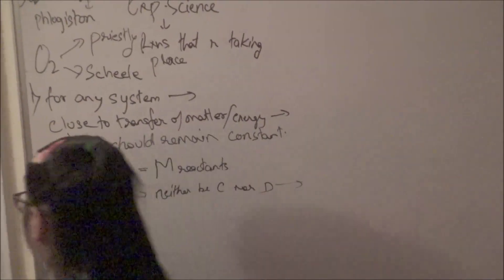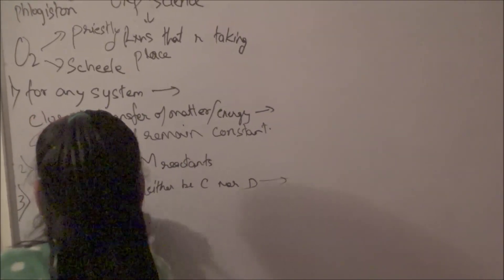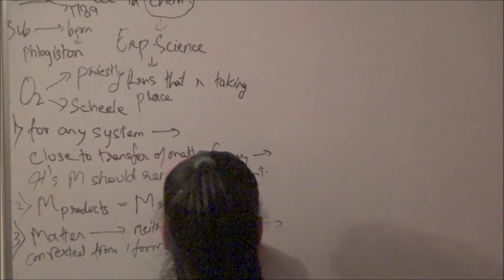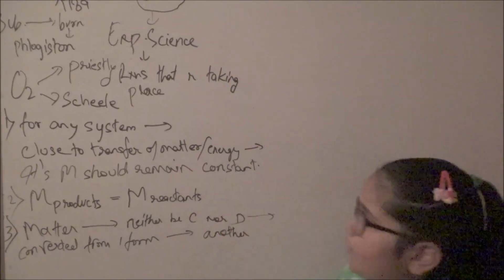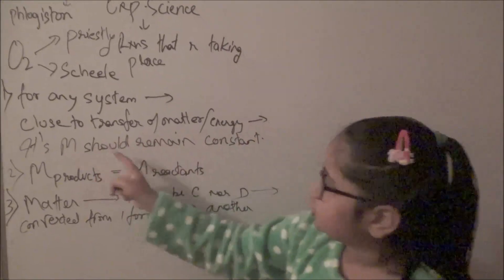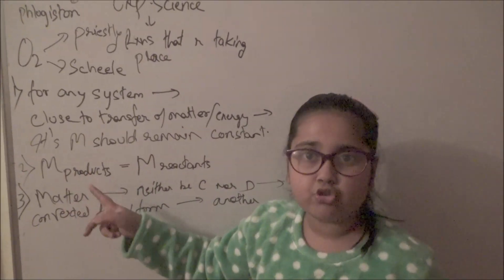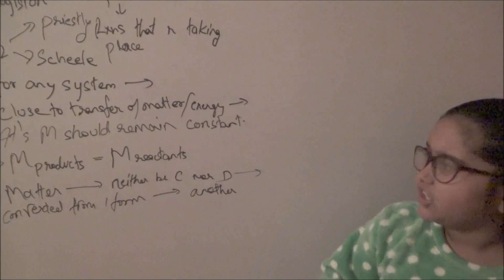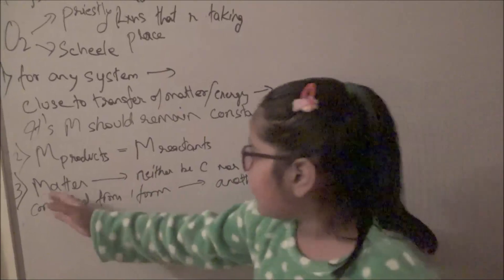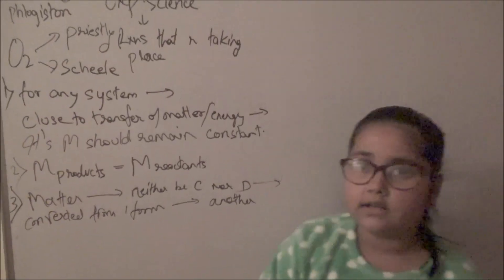Matter can neither be created nor destroyed. So what does it mean? It can be converted from one form to another. So law of conservation of mass states that for any system which is closed to transfer of matter or energy, its mass should remain constant. The mass of products equals the mass of reactants, and matter can neither be created nor destroyed, but it may be converted from one form to another.